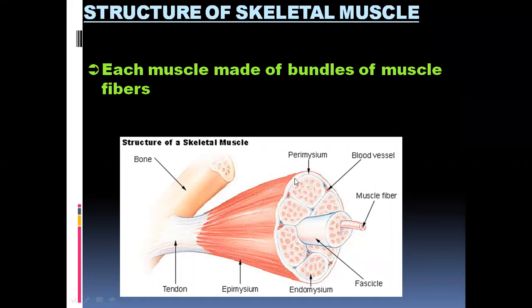The outermost bundle is covered by the epimysium. The tendon is an extension of the muscle which attaches the muscle to the bone. Ligaments join bones to bones, whereas tendons are specific extensions of the muscle itself and serve to connect the muscle to the bone.